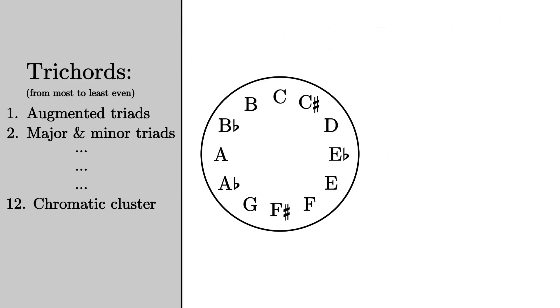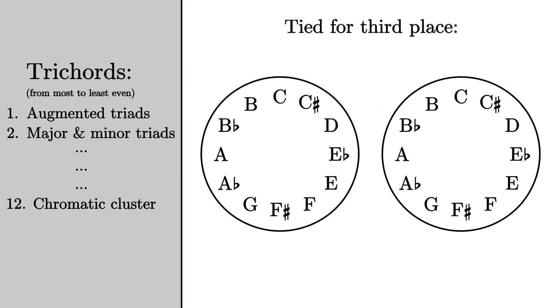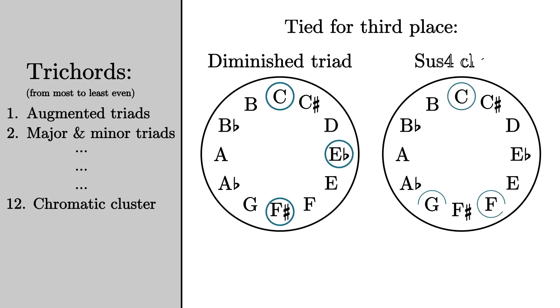But one complication that I should point out is that sometimes you find two sets that are fundamentally different but equally even. For example, a diminished triad and a sus4 chord both require the same amount of alteration to become perfectly even. You have to change two notes by one semitone each.